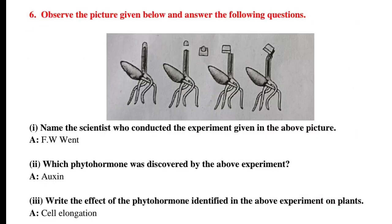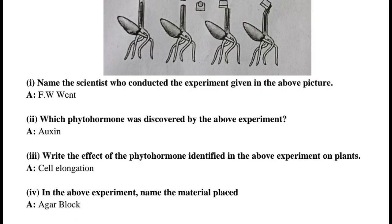Question number 6: Observe the picture given below and answer the following questions. 1. Name the scientist who conducted the experiment — Answer: F.W. Went. 2. Which phytohormone was discovered by the above experiment? Answer: Auxin. 3. Write the effect of the phytohormone identified in the above experiment on plants. Answer: Cell elongation. 4. Name the material placed in the above experiment. Answer: Agar block.